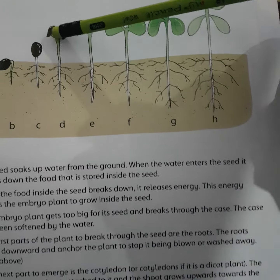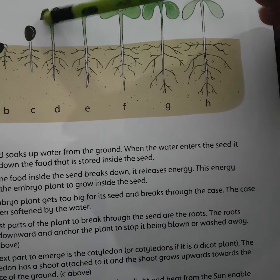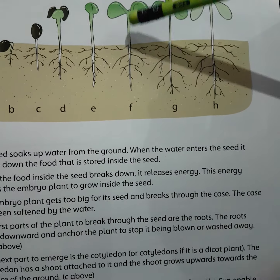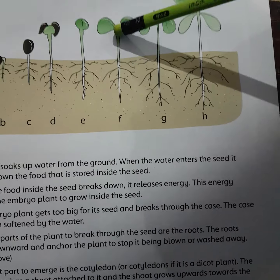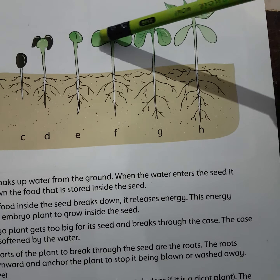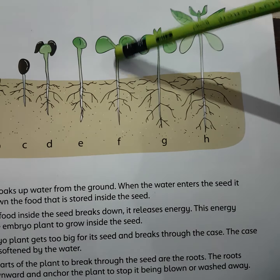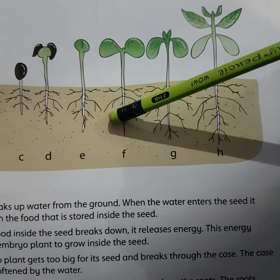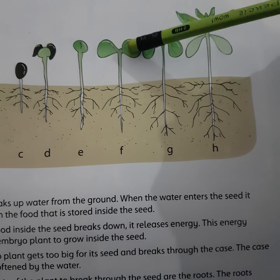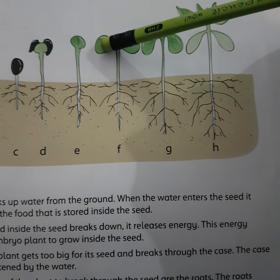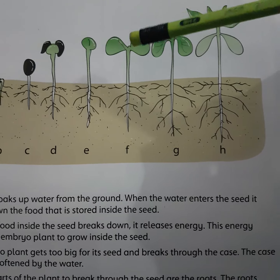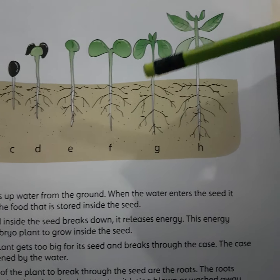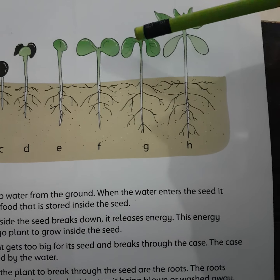جب plant ابھی food produce کرنے کے قابل نہیں ہوتا، تو cotyledon leaves جو ہیں وو green ہونا start ہو جاتی ہیں۔ جب یہ green ہوتی ہیں تو plant proper طریقے سے اپنے لیے food prepare کرنا شروع کر دیتا ہے — roots جمین سے water اور minerals absorb کرتی ہیں اور sunlight اور chlorophyll کی موجودگی میں اپنا food prepare کرنا شروع کرتا ہے۔